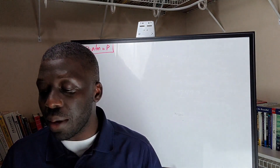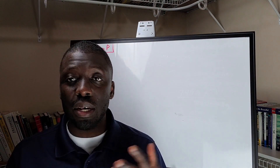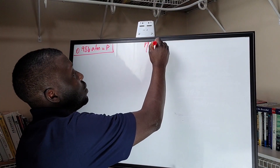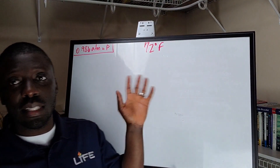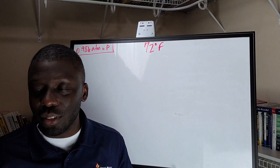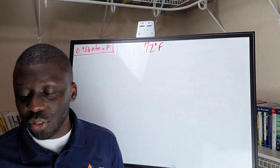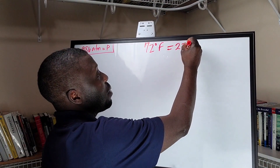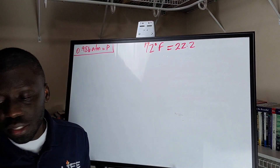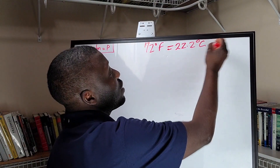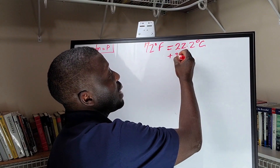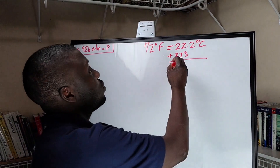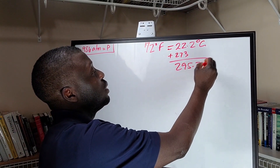Let's now find our temperature. Let's say the temperature was 72 degrees Fahrenheit. We can convert that to Celsius — that would become about 22.2 degrees Celsius. And then we can convert that to Kelvin by adding 273, so we have 295.2 Kelvin.